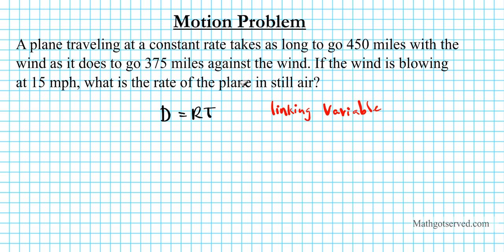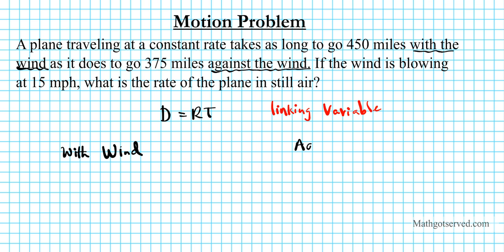The plane traveling at a constant rate covers 450 miles traveling with the wind. That's one case. The second case is 375 miles against the wind. So those are the two cases we have: traveling with the wind and against the wind. I'm going to label these as 'Wind' and 'Against Wind.'